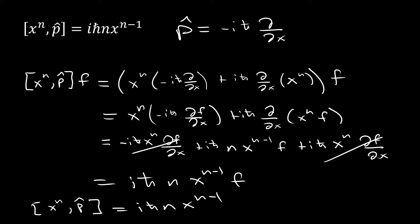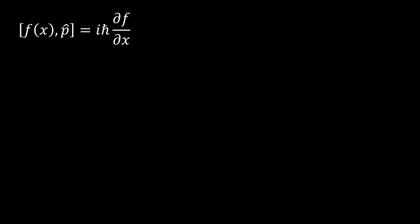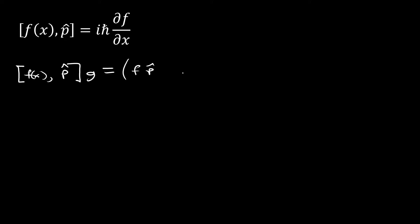Now for part c, we're dealing with the momentum operator again using the same form: minus i·h-bar partial over partial x. We want to show the commutator [f(x), p-hat]. We're going to take a similar approach, but now we have an arbitrary function f of x. To perform the commutation we're going to apply the commutator to another arbitrary function g of x. So we expand out [f, p-hat] applied to g as f·p-hat minus p-hat·f, all applied to g.